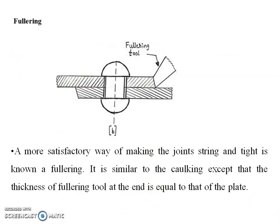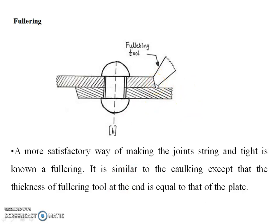The fullering process: a more satisfactory way of making the joint leak-tight is known as fullering. It is similar to caulking except that the thickness of the fullering tool at the end is equal to that of the plate, whereas in caulking it is not like that.